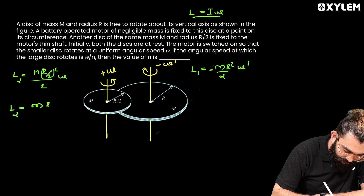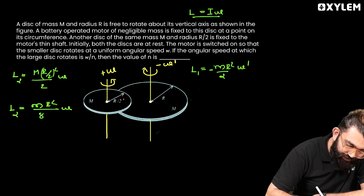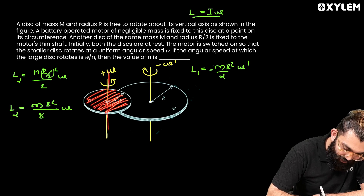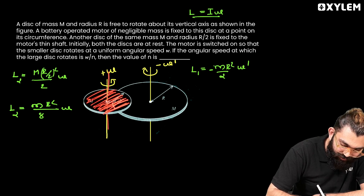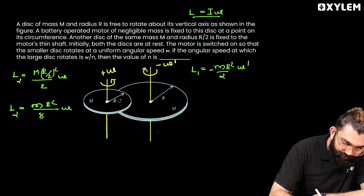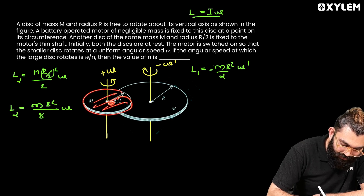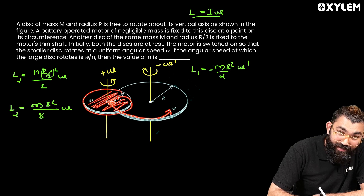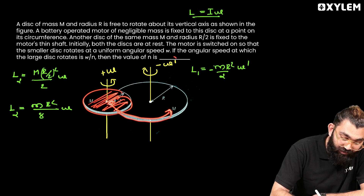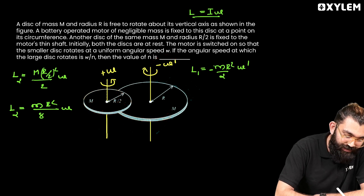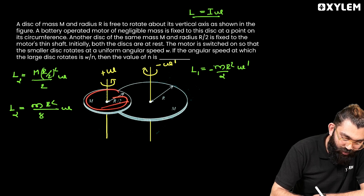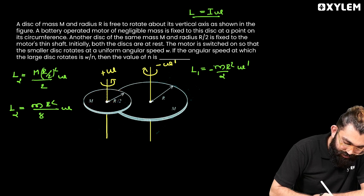The smaller disc is also rotating along with the larger disc, so we need to account for the orbital angular momentum of the smaller disc. The smaller disc's mass is assumed to be concentrated at its center of mass, which is located at the circumference of the larger disc — a distance R from the axis. So the orbital angular momentum is L2_orbital = mR² × (−omega_dash).